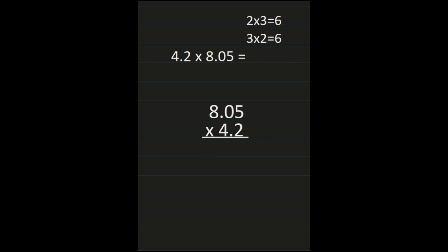For this example, we have 4 and 2 tenths times 8 and 5 hundredths. We don't need to line up the decimals when multiplying, but we do need to think about how we're lining up the digits. One thing to think about is the commutative property of multiplication — 2 times 3 equals 3 times 2. So we can put 8 and 5 hundredths on top and multiply it by 4 and 2 tenths. It doesn't matter what order we place our numbers in, and we don't need to line up the decimal point.